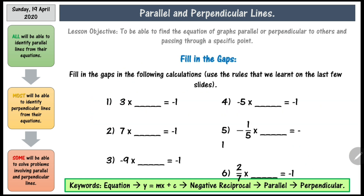Once you have watched that video, please have a go at finding the negative reciprocal of the following questions. I'm just going to talk you through the first one — the negative reciprocal of 3 is simply minus one-third. Pause the video, have a go at the remaining questions. Once you are done, play the video again and check whether you have got them correct or not.